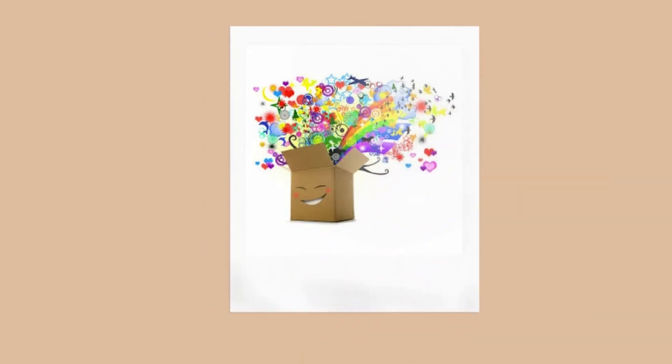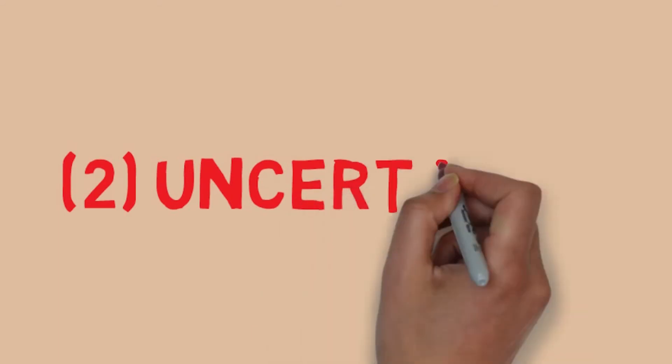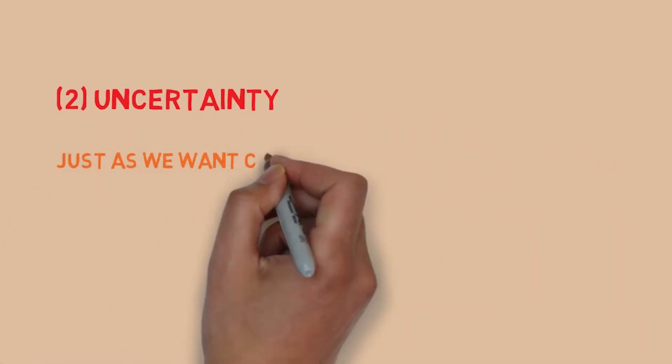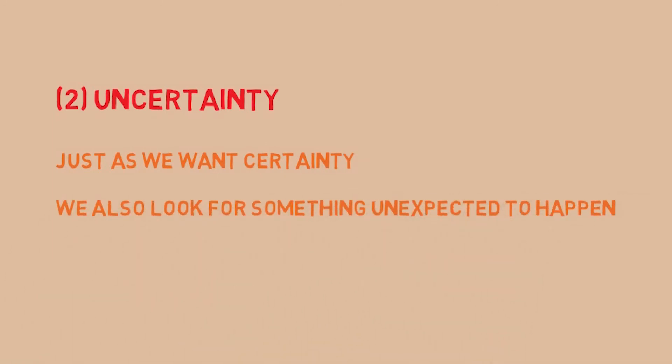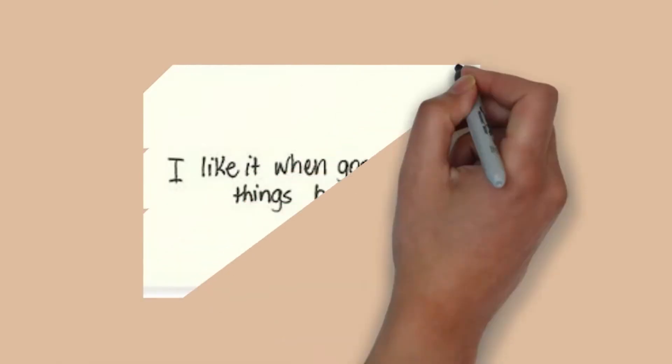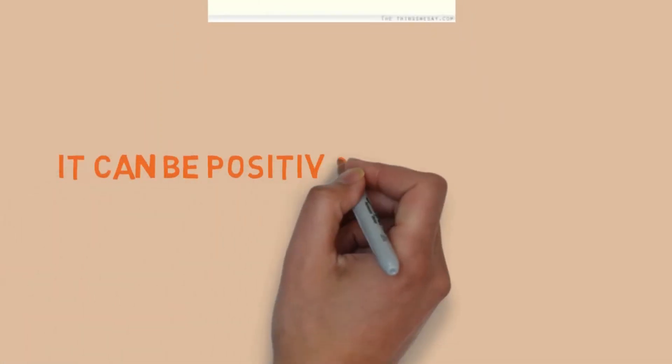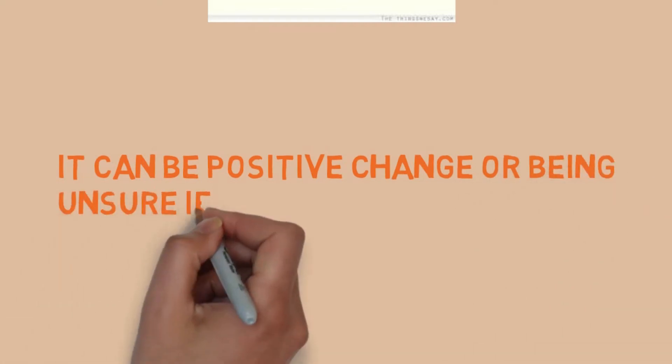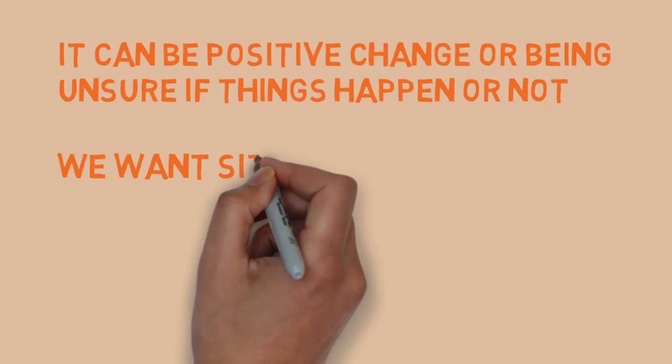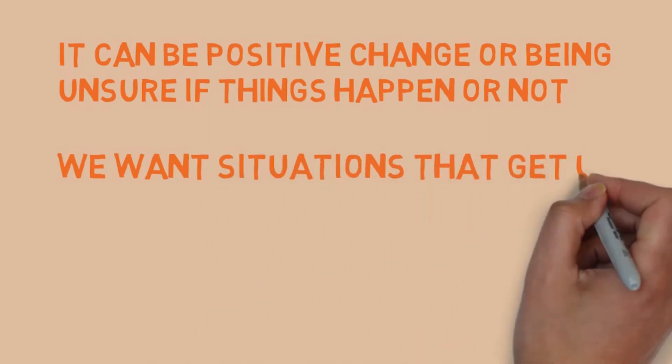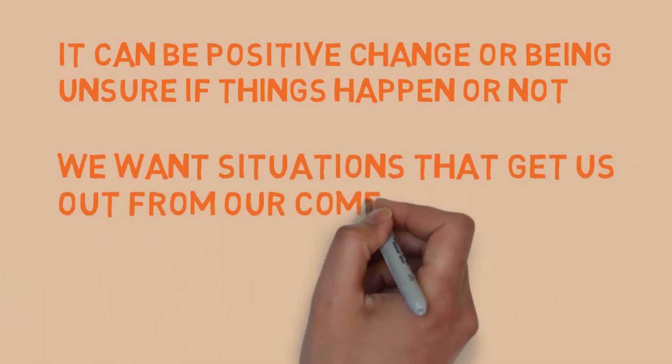good or happy. Next is uncertainty. Just as we want certainty in our lives, we also look for variety in life. We look for something unexpected to happen—it can be positive change or uncertainty about whether things happen or not. We want situations that get us out of our comfort zone.